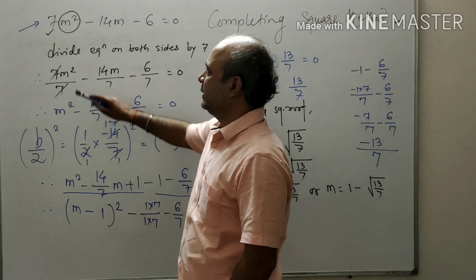This is the solution of the given quadratic equation by the completing square method. The original quadratic equation was 7m² - 14m - 6 = 0.